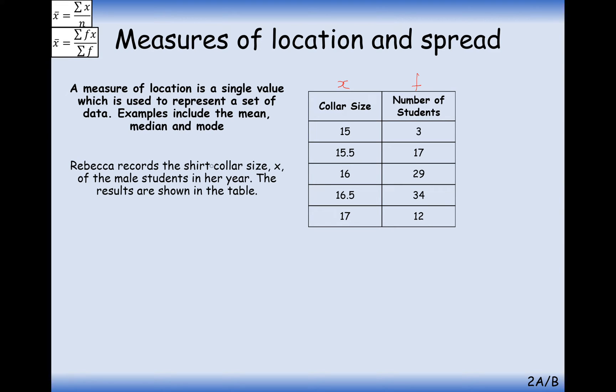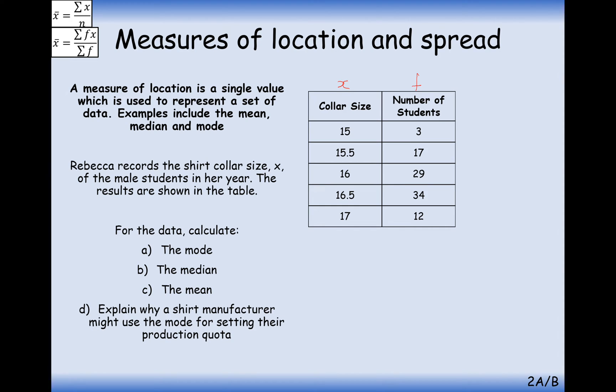Rebecca records the shirt's collar size x of the male students in her year. The results are shown in the table. For the data, calculate the mode, the median, and the mean. Well, first of all, looking at the mode, that's the easiest one. It's the one with the highest frequency, so it's 34, or it's the group with 34 values, which is the group of 16.5 centimeters on their collar size. So that's 16.5 there.